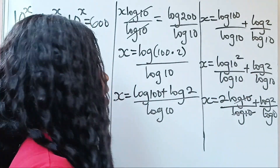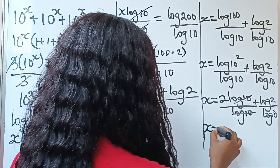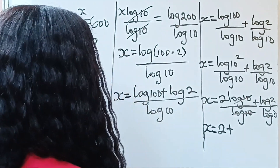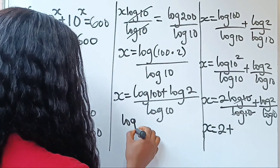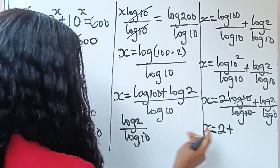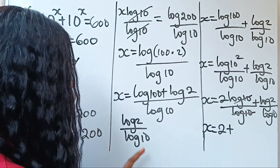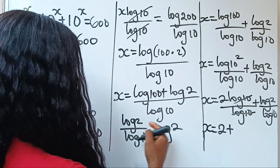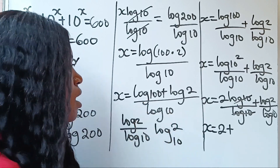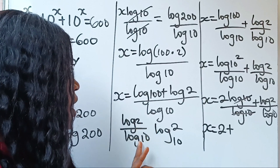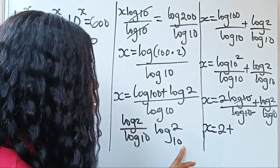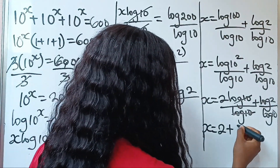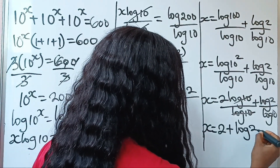Now, log 10 divided by log 10 cancels itself. So we have x is equal to 2 plus log 2 over log 10. When you have log divided by log with the same base, you pick one log — this becomes your number and this becomes your base. So log 2 divided by log 10 is the same thing as log base 10 of 2. So x equals 2 plus log base 10 of 2.